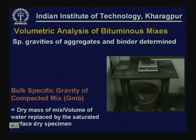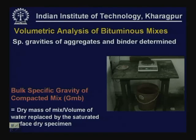The compacted specimens are extracted from the mold. We determine the specific gravity of aggregates and binder first, then for the extracted specimen, the bulk specific gravity of the compacted mix (Gmb) is obtained by measuring the dry mass and dividing by the volume of water replaced by the saturated surface dry specimen. Dry mass divided by this bulk volume gives the bulk specific gravity of the compacted mix.